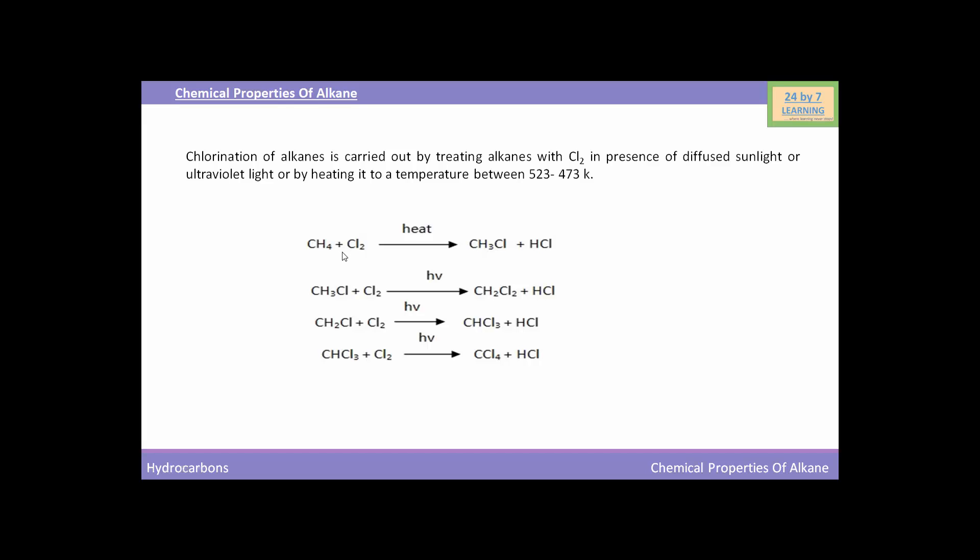You can see methane CH4 when will react with chlorine molecule then in presence of heat it will form CH3Cl that is methyl chloride. And when this methyl chloride will react with another chlorine molecule then the reaction will yield CH2Cl2 that is dichloromethane and here you can see dichloromethane will again react with chlorine molecule and will form CHCl3 that is chloroform which on again reaction with chlorine will form CCl4 that is carbon tetrachloride.